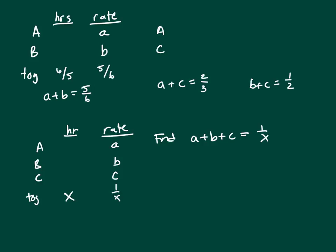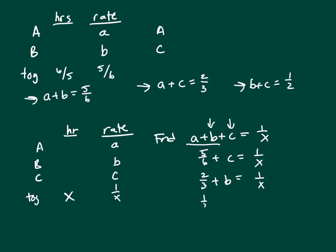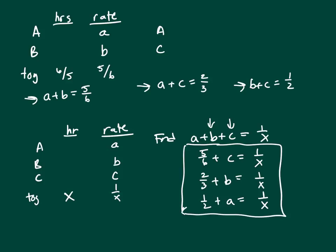Let's use this information and form three equations. A plus B plus C equals one over X. We know A plus B is five-sixths, so that's five-sixths plus C equals one over X. We know A plus C is two-thirds, so that would be two-thirds plus B equals one over X. And B plus C is one-half, so one-half plus A equals one over X.